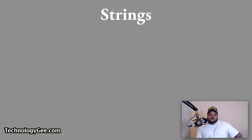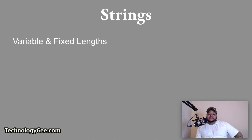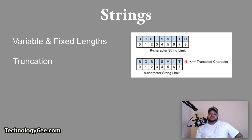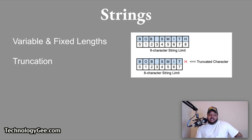Strings can also have variable or fixed lengths. For example, if a string has a length of 10 characters but you attempt to enter more than 10 characters, all characters after the 10th character will be cut off. This is called truncation. Here's an example: there's a nine-character string limit to enter the name Bob Smith. If you implement an eight-character string limit and try to enter Bob Smith, the letter H will be cut off. Data entry designers need to take into account both typical and larger examples of proper names when sizing data entry fields.